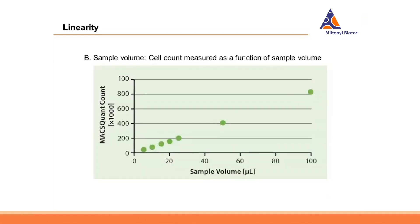There is another way to draw these results: one can plot the volume being measured against the count obtained, and this should again be linear. In this diagram, picking 100 microliters of sample gave a cell count of about 800,000 cells. At 50 microliters, as expected, slightly more than 400,000 cells were counted, and at 25 microliters slightly above 200,000. We would expect a perfectly straight line, and this is exactly what we see here.